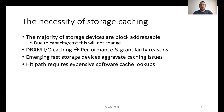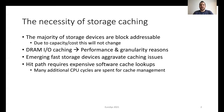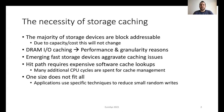The introduction of emerging fast storage devices aggravates storage caching issues. First, the heat path requires expensive software cache lookups, and this results in spending many more precious CPU cycles for cache management rather than user processing. Additionally, in storage caches, one size does not fit all. As an example, applications use specific techniques to reduce small random writes, separate reads and writes for cache pollution purposes, and other application-specific optimizations.